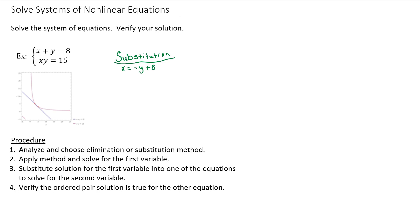All I did was rearrange my first equation. Then I'm going to sub that into my second equation, which is XY equals 15. So if we do the substitution step, X is negative Y plus 8. Plug that into X in the second equation. So we get negative Y plus 8 times Y is 15. That's the substitution step.